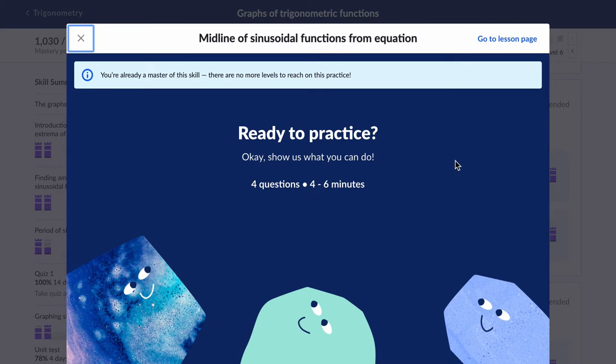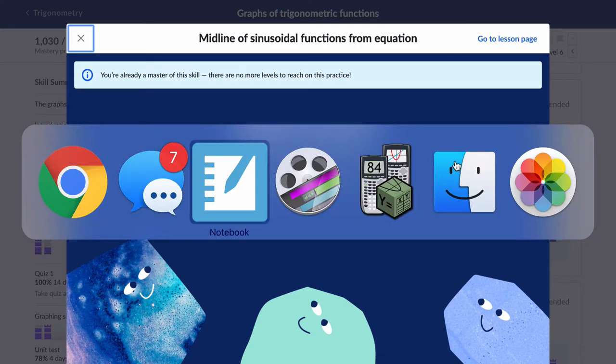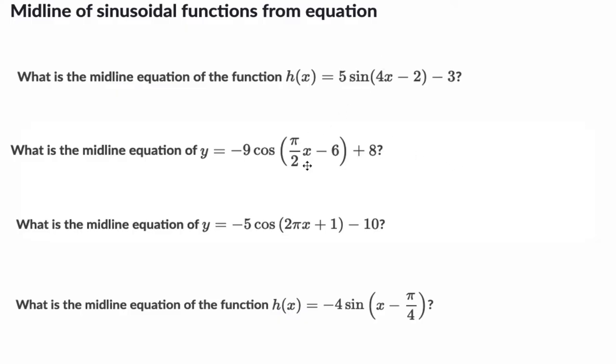This one we can do rather quickly, and I'll explain for a minute or so what's happening. So in this example, here are our four equations, and to find the midline from an equation, it ends up being quite easy, and that's by design. These equations are set up and written in such a way so we can identify the midlines really quickly.